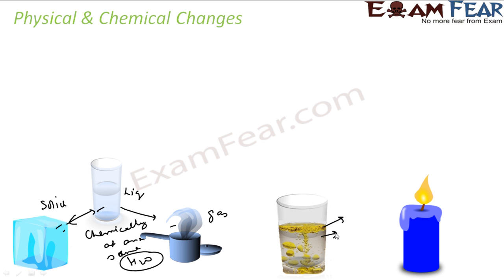Consider water and oil. Both have the same physical property — they are liquid. But if you talk about chemical properties, they are different. They have different smell; oil burns, water doesn't burn. So they have different inflammability. You can have substances with the same physical property but different chemical properties, or the same chemical property but different physical properties.